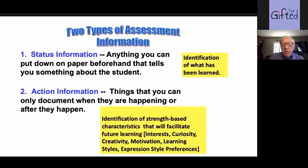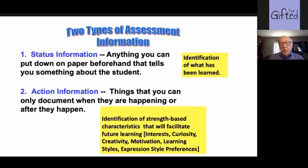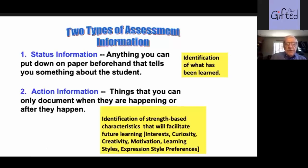I also talk in my work about two types of assessment. One is called status information — that's anything you could put down on paper before you even meet a child: scores, teacher ratings, things like that. Action information are things that you could only document when they are happening or after they happened. So we're trying to identify strength-based characteristics that will facilitate future learning — creativity, motivation, learning styles, etc.